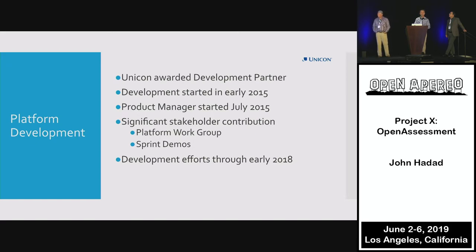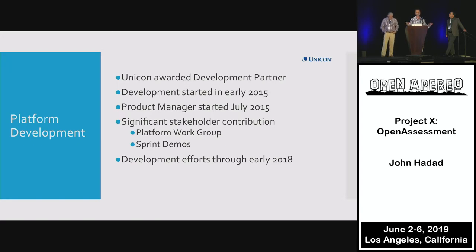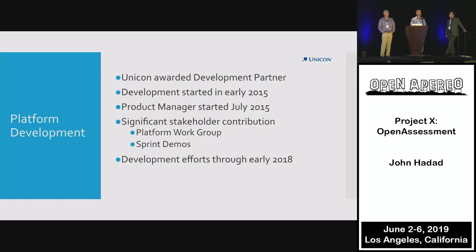I came on as product manager in July of 2015. I was tasked with getting together key stakeholders representing the field from an assessment perspective, counseling faculty, instructional faculty, IT, and research. Multiple stakeholder groups were represented in a work group that I led which fed a lot of input into the process. Our users were in lockstep with us providing requirements, helping us prioritize features and functionality. Our platform workgroup met in person about once a month, complemented by sprint demos — a very agile methodology.